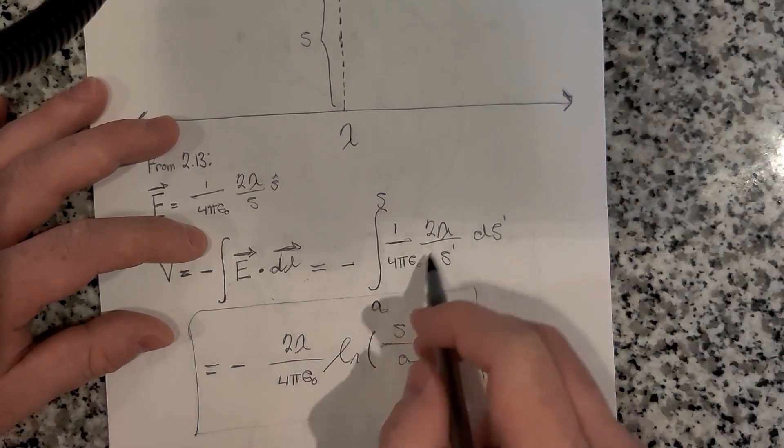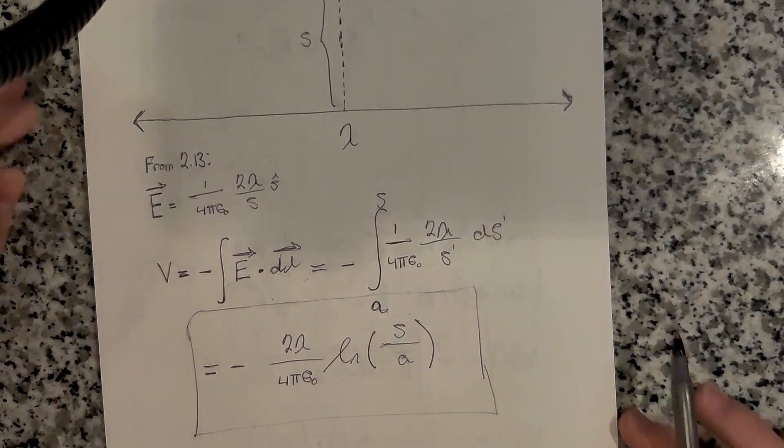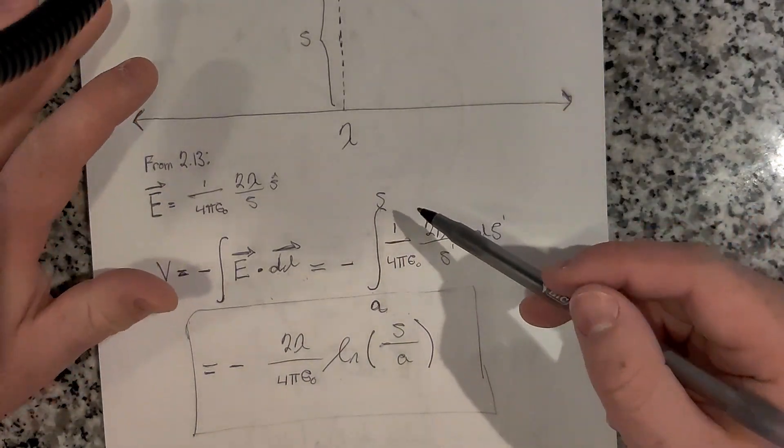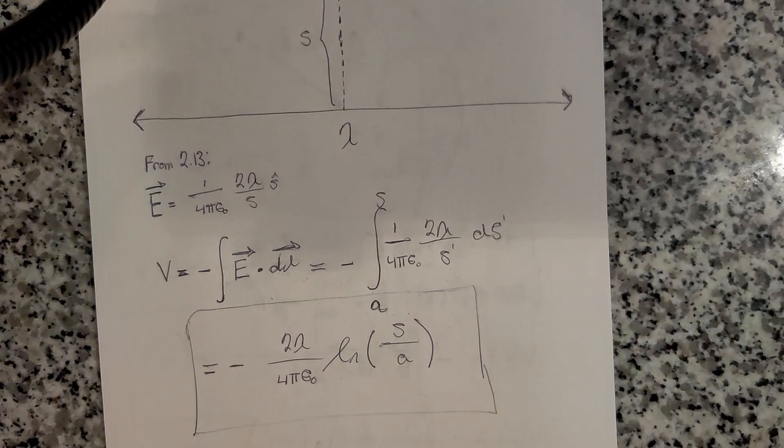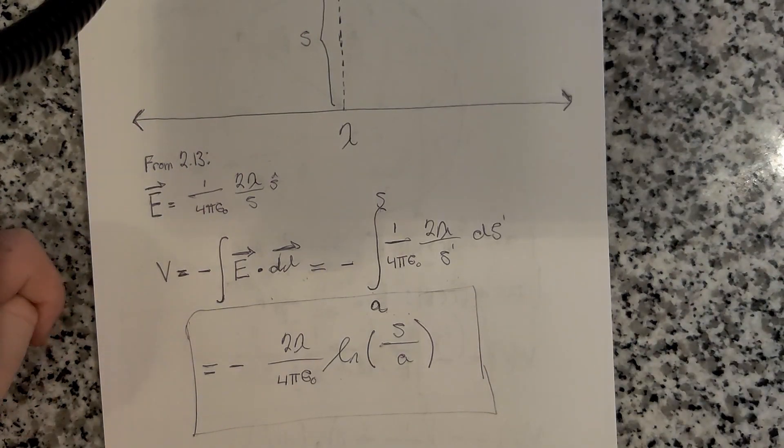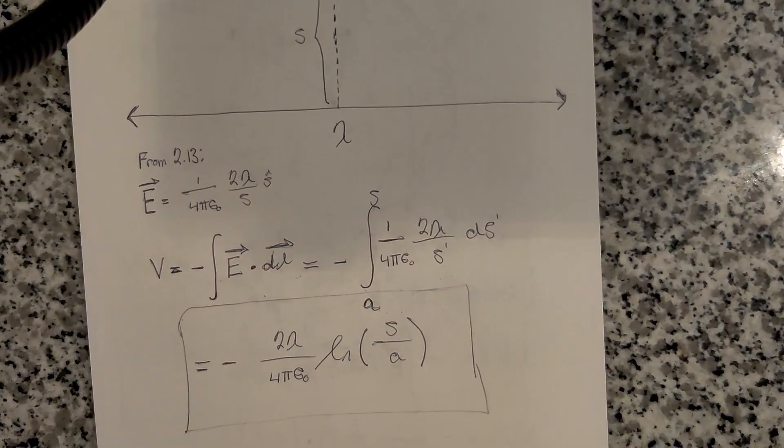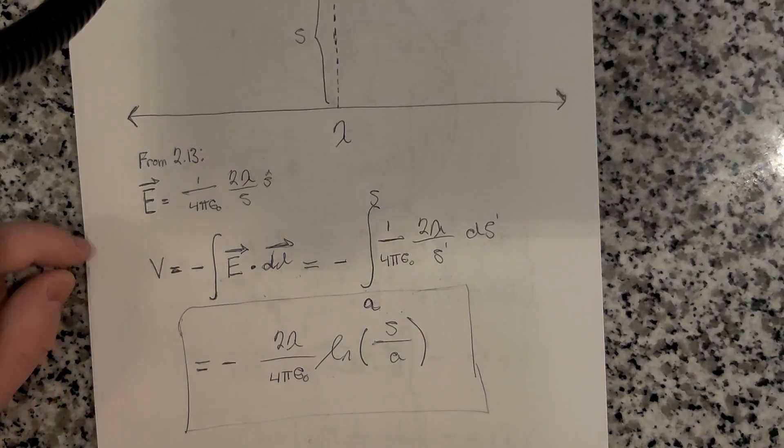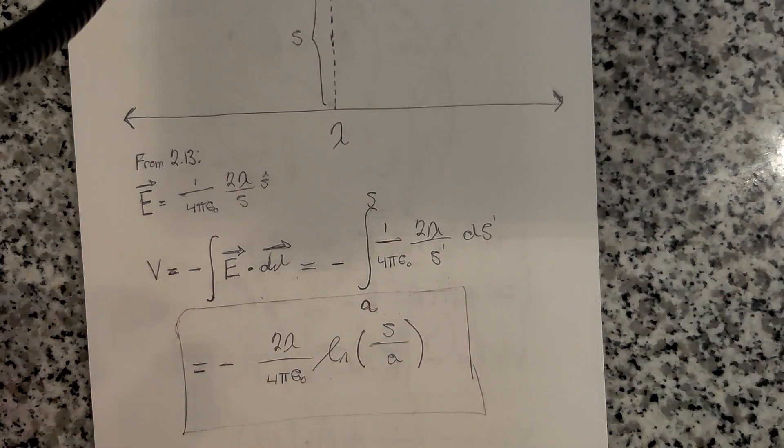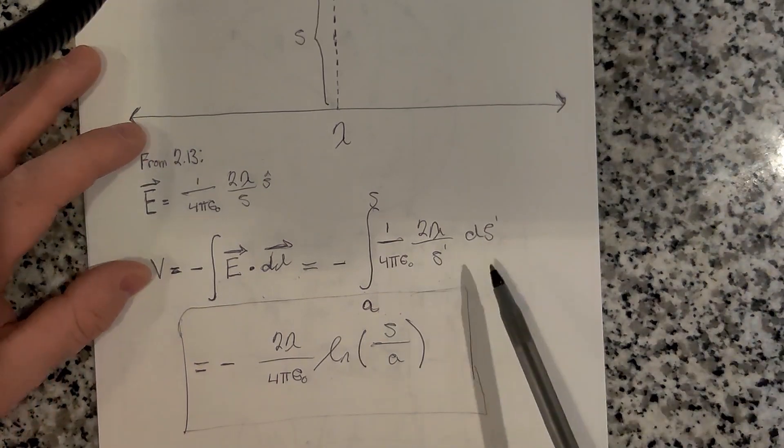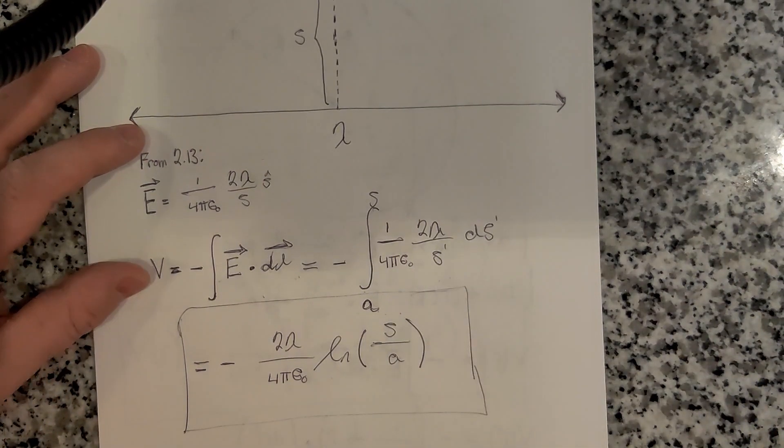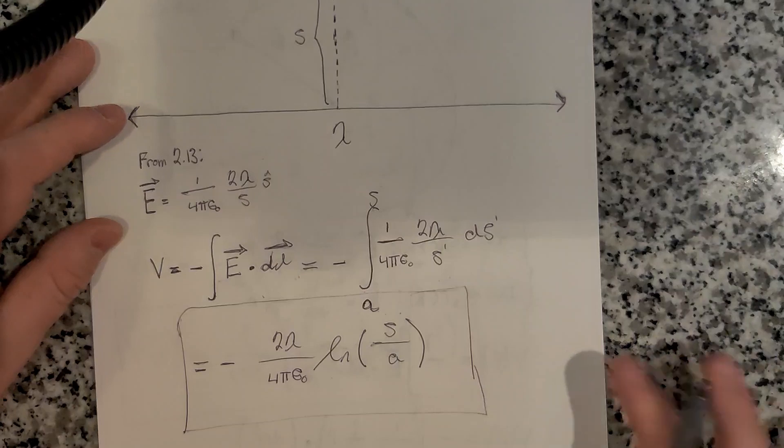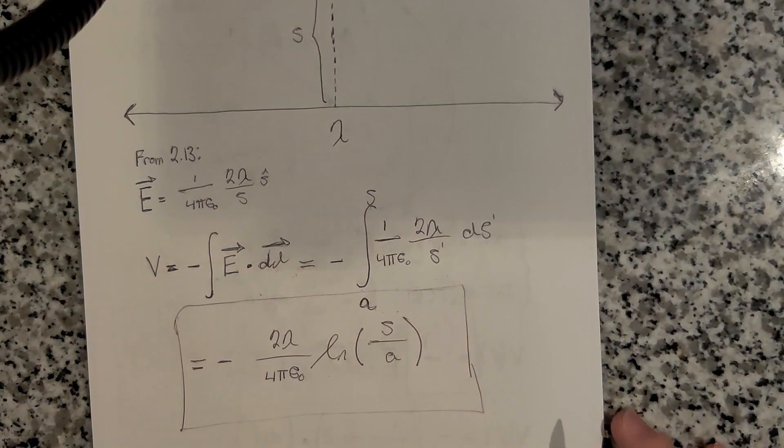If you're wondering how I did that integral, that's just one of the standard integrals. The integral of 1 over x with respect to x is just the natural log of x. That's just a standard integral that you should remember. There are proofs for it, but honestly, it's just better to remember it. If you're really curious, be my guest and Google it or YouTube it. There's definitely people who have solved it, I'm sure.